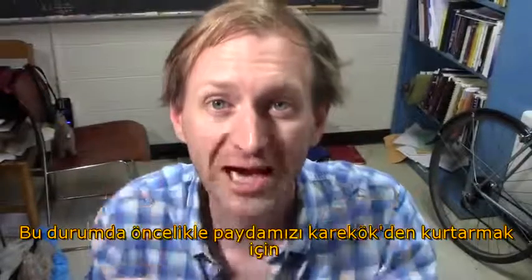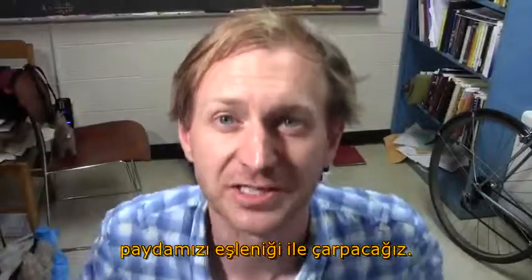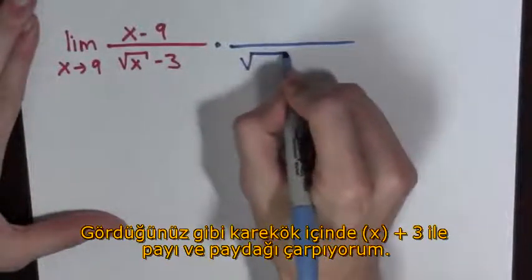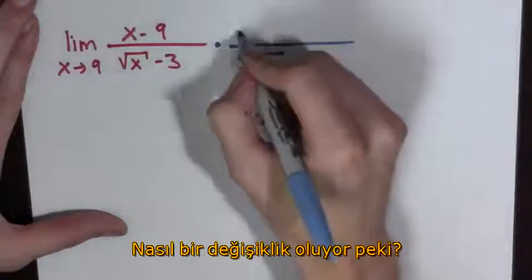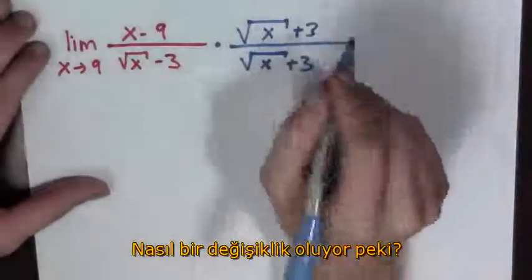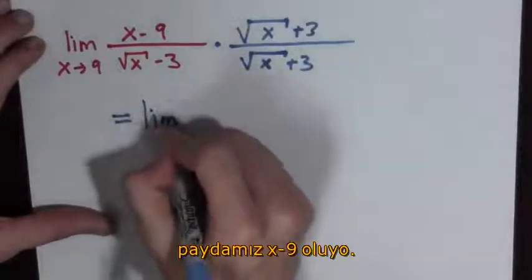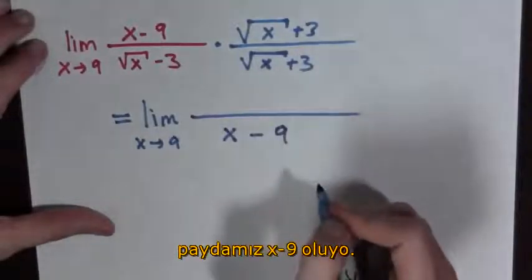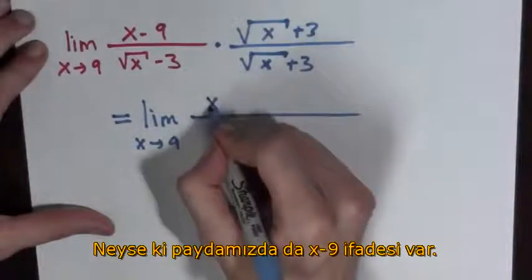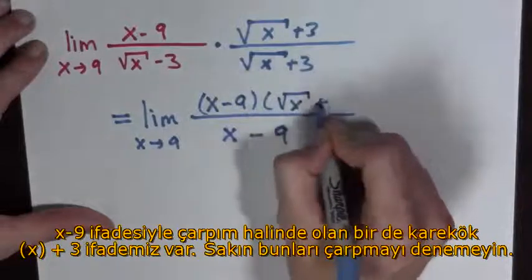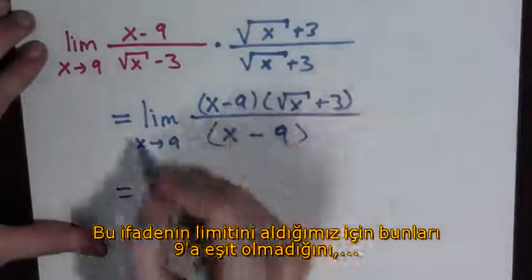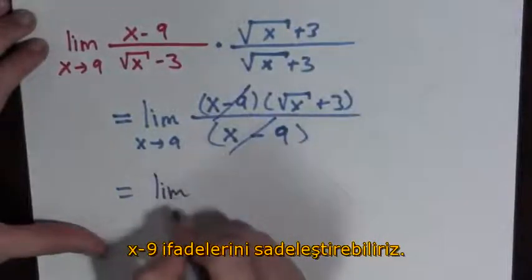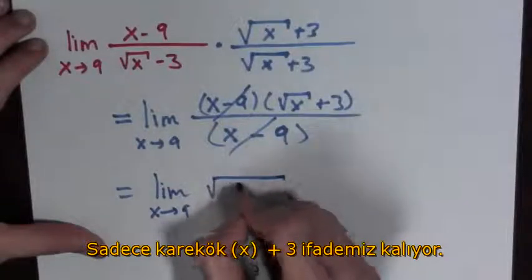In this case we rationalize the denominator by multiplying by the conjugate. So we multiply by the square root of x plus 3 over the square root of x plus 3. In the denominator this is going to equal x minus 9. However, we have x minus 9 in the numerator already and the square root of x plus 3 — don't even multiply it out. Since we're taking the limit and assuming that x is not equal to 9, we can cancel these out and we get the limit as x goes to 9 of the square root of x plus 3.